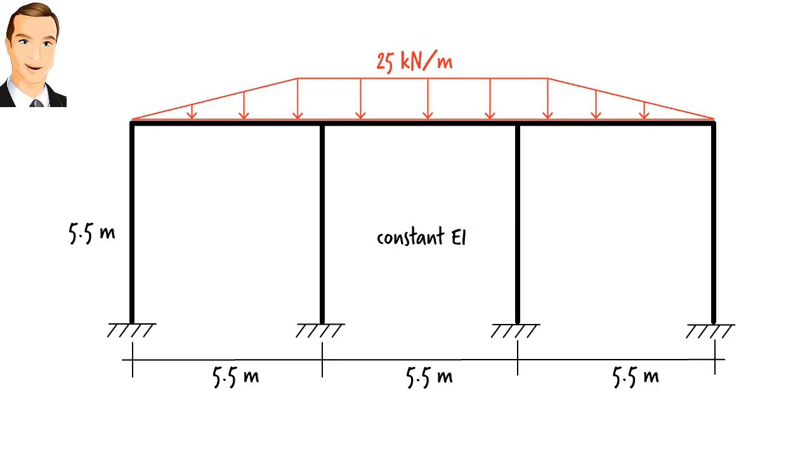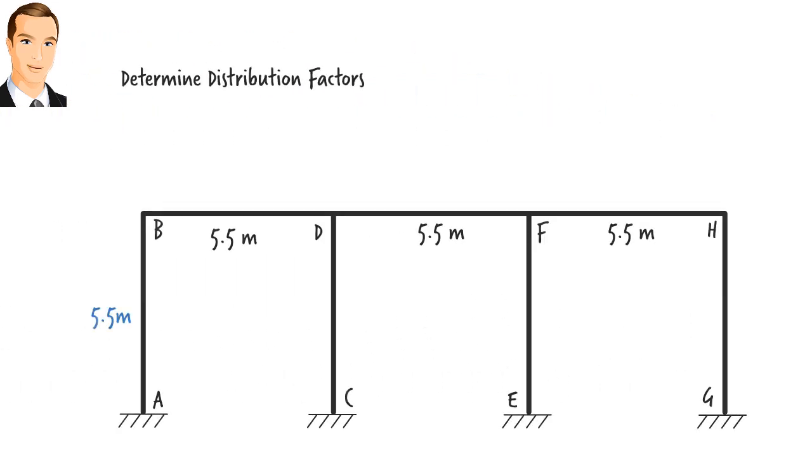Let's label the two ends of each structural member. Since the frame has a constant EI, we can calculate the distribution factor with relative ease.